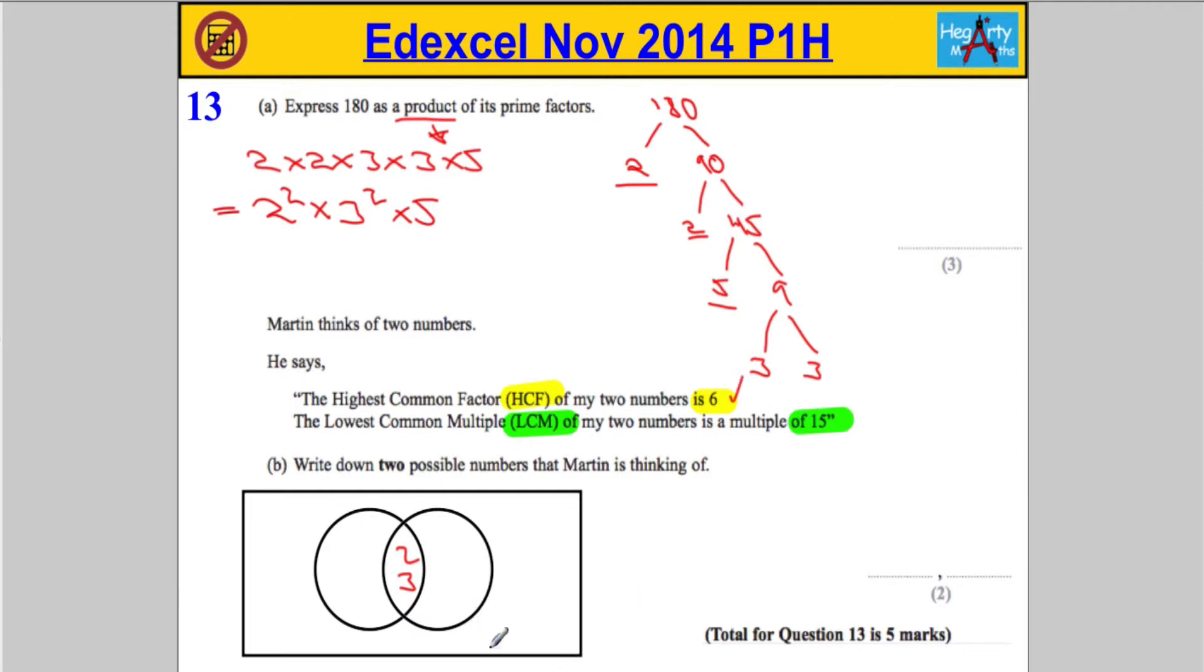Now, the LCM is found by taking the HCF, what's in here, and multiply it by everything else. I need to take these numbers here, which is the product of these numbers, which is 6. I need to multiply it by something so that it's a multiple of 15.